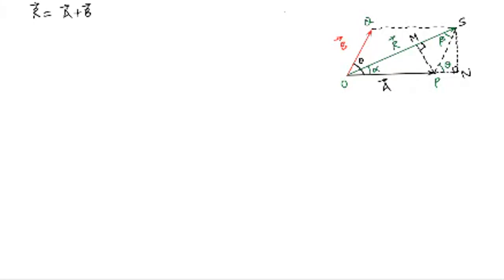How did we get the resultant? By completing the parallelogram OQSP. We have extended the line of action of vector OP till point N so that the perpendicular from the head of the resultant cuts the extension of OP at N. We have also drawn a perpendicular from point B to the resultant vector which cuts it at M. This angle is 90 degrees, and this angle is also 90 degrees.